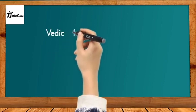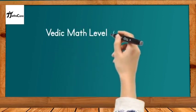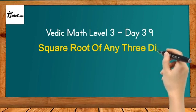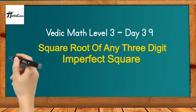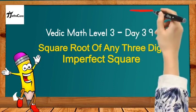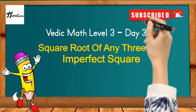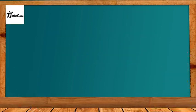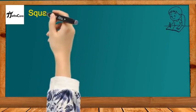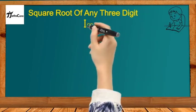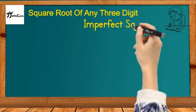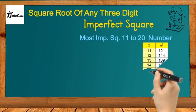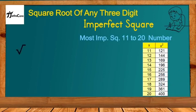Hello everyone, welcome to Math Score. It's Vedic Math Level 3, Day 39, and today we will learn about a Vedic math technique for finding the square root of any three-digit imperfect square. If you are new to this channel, please subscribe and click the bell icon, and don't forget to like, share, and comment. It's most important that you know the squares of 11 to 20 very well — a reference table is provided here.